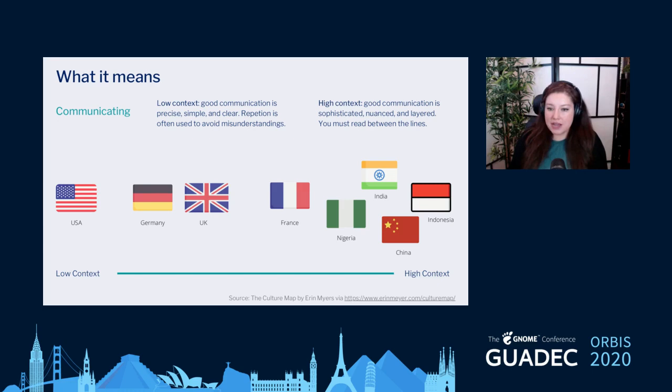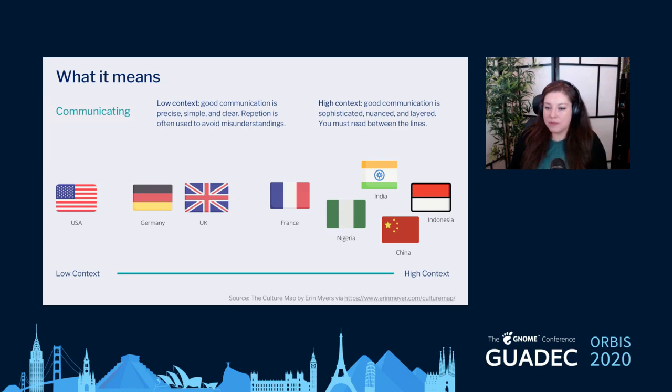Looking at the indicator, we can see the low context and high context cultures. Interestingly, the US and the UK, which share the same language, still vary — the UK is higher context than the US. Similarly, Germany is much lower context than France. A lot of Asian cultures tend to fall further into the high context realm.